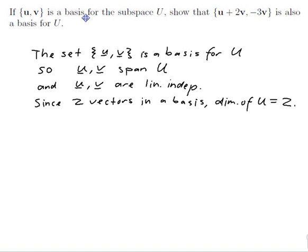Which means that all the basis sets have to have 2 vectors in them, and the set I'm trying to show as a basis has 2 vectors in it, so that's good. But I really just need to show that it satisfies the 2 rules for basis: show that it spans U and that it's linearly independent. So let's see if it spans.